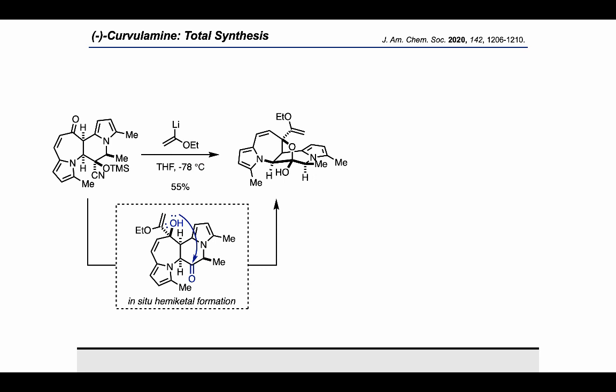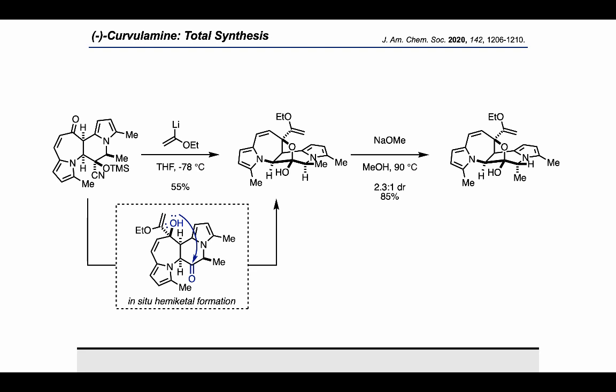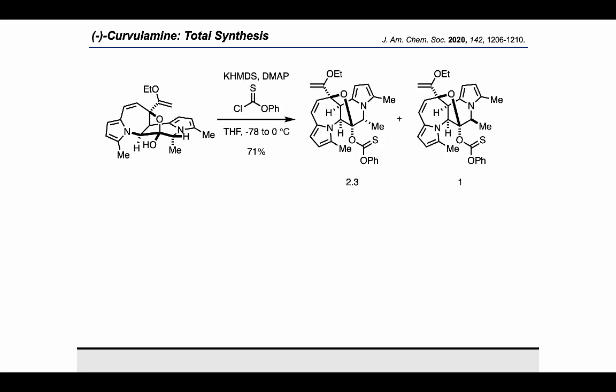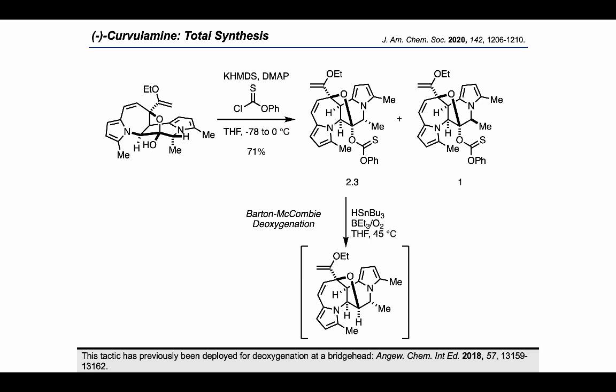At this stage, the authors were able to fix the stereochemistry at the methyl-bearing stereocenter to some degree. By treating with sodium methoxide, they were able to epimerize the starting material and form a diastereomeric mixture. Then, they activated the bridgehead tertiary alcohol with phenyl chlorothionoformate, which allowed the separation of the diastereomeric product mixture. Importantly, the wrong diastereomer could be recycled using the sodium methoxide epimerization protocol. Then a Barton-McCombie deoxygenation resulted in removal of the bridgehead oxygen.